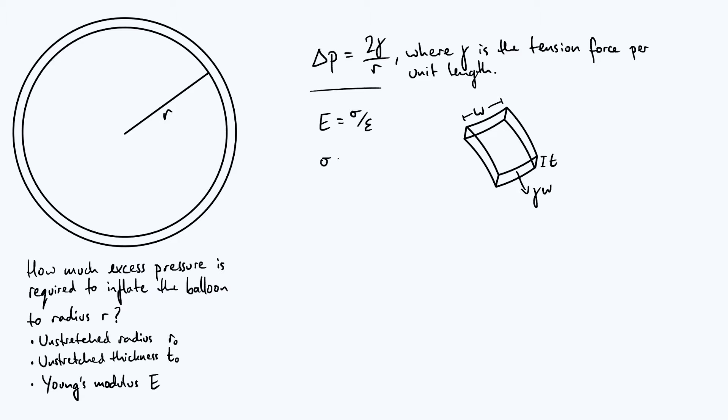So then we use the fact that stress is force per unit cross-sectional area, and we've just said the force is γW. The cross-sectional area is of course just T times W, and then W doesn't actually matter because it cancels out, and you find that the stress is just γ divided by T.